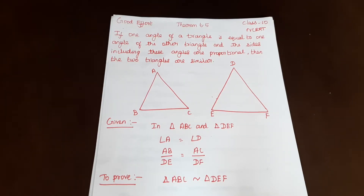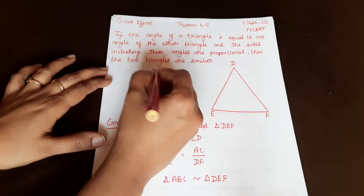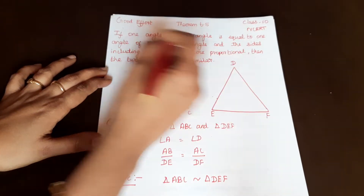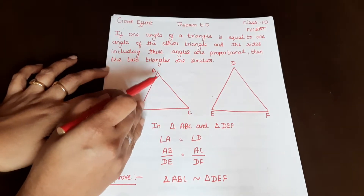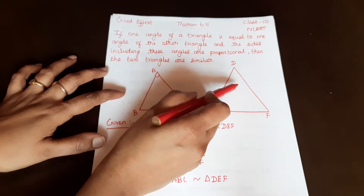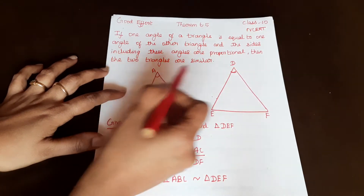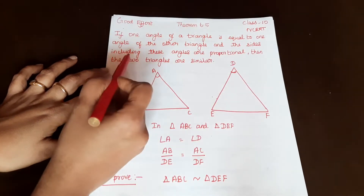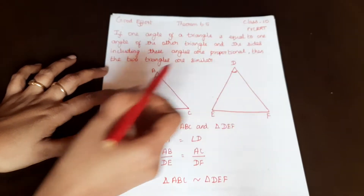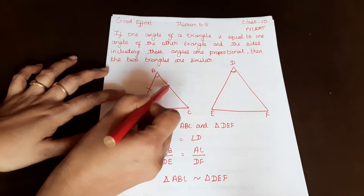If one angle of a triangle is equal to one angle of another triangle and the sides including these angles are proportional, then the two triangles are similar. So if the included angles are equal and the sides including these angles are proportional, then the triangles are similar.